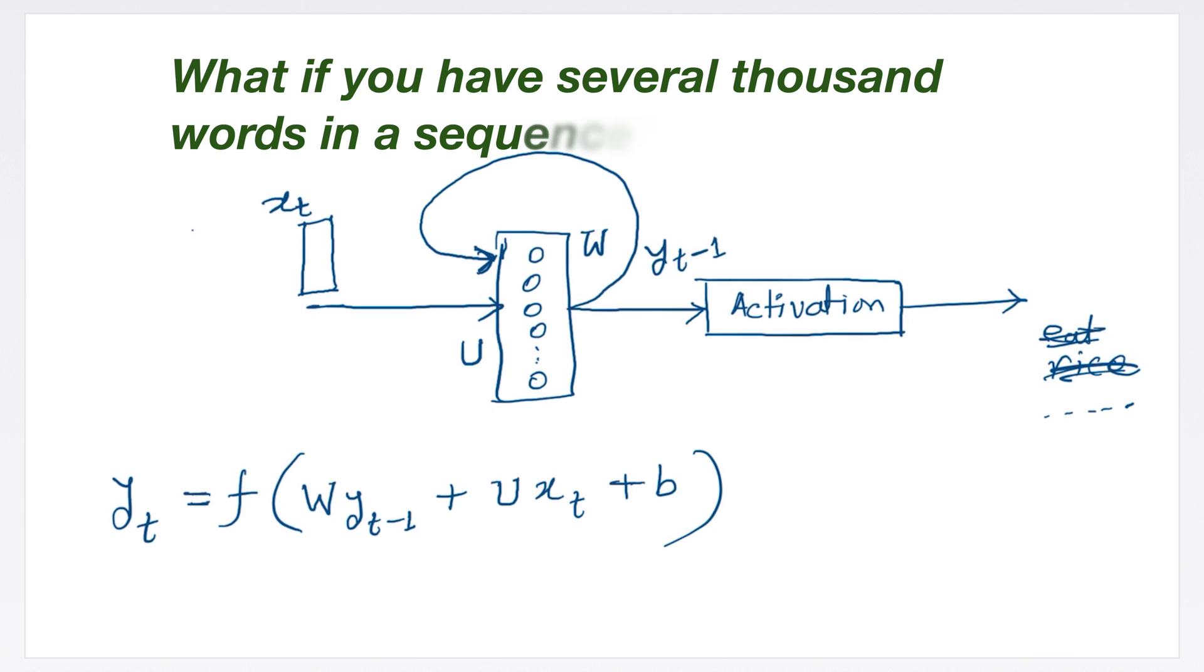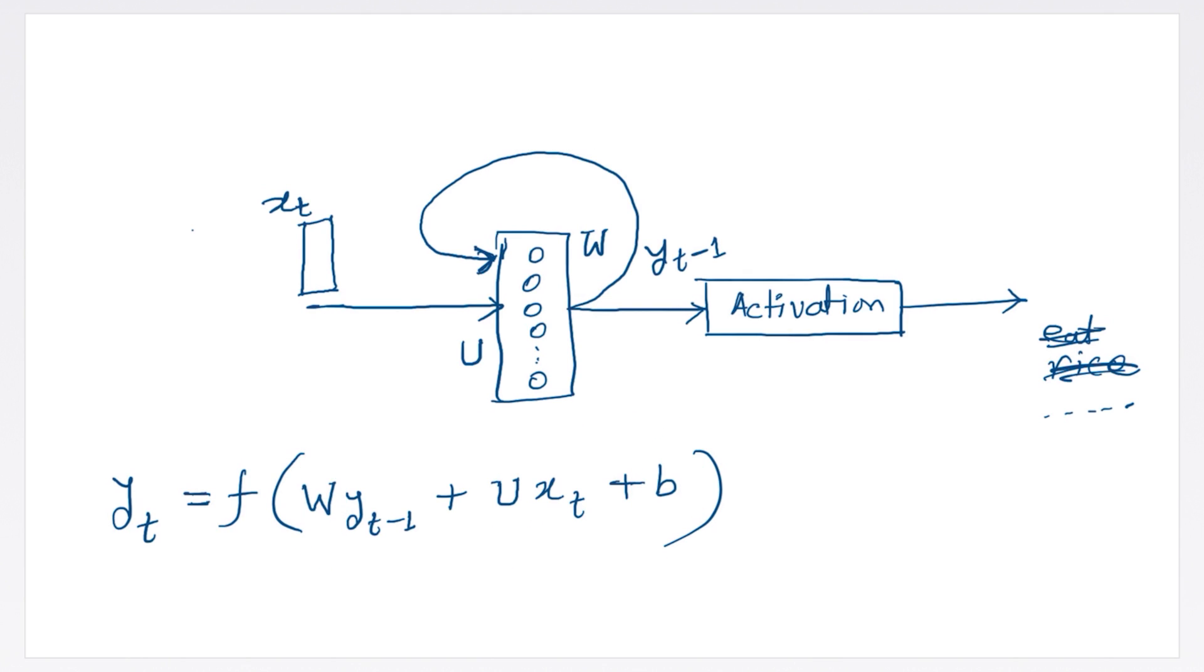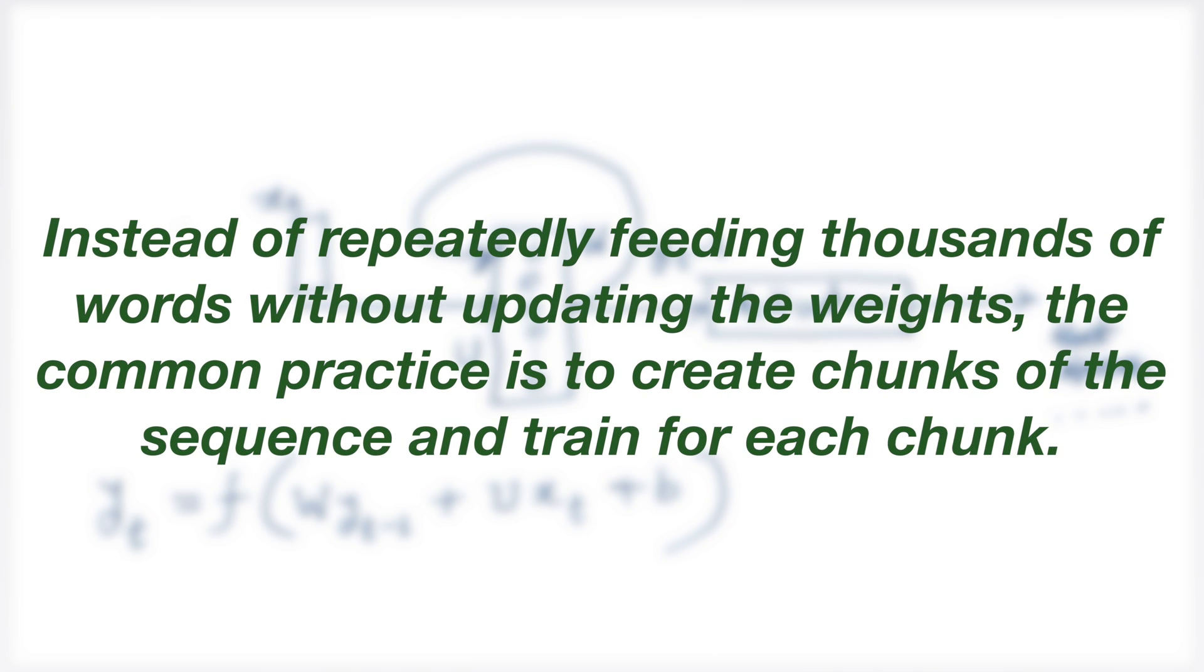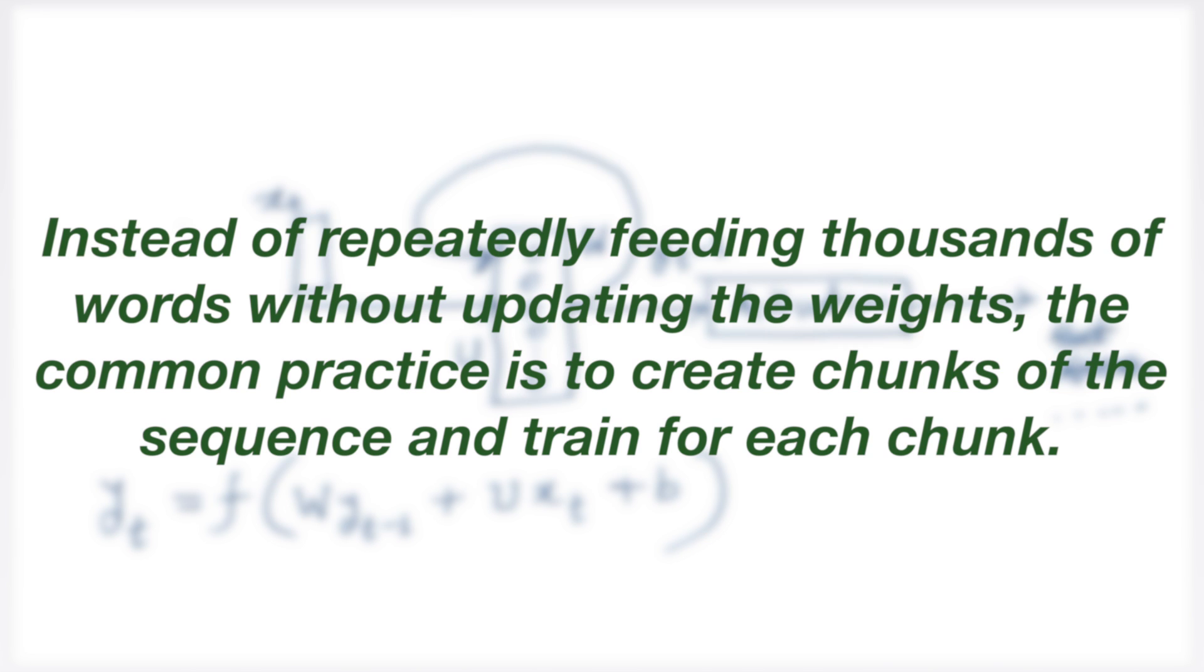What if you have several thousand words in a sequence? Should we keep feeding the words through the RNN one after another without updating W, U and B? No, RNNs have serious issues. RNNs are particularly susceptible to the problems of vanishing and exploding gradients, especially with long sequences. In such cases, the gradients can either become too small or too large as they are propagated back through each time step of the sequence, making it difficult to train the network effectively. Instead of repeatedly feeding thousands of words without updating the weights, the common practice is to create chunks of the sequence and train for each chunk.